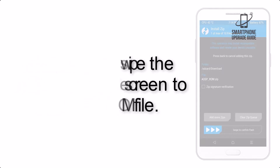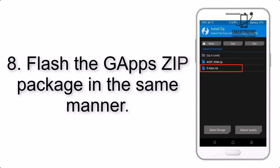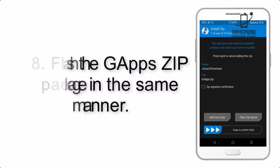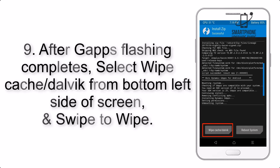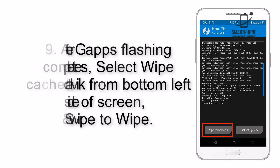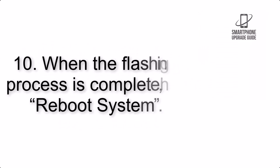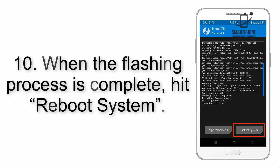Step 8: Flash the GApps zip package in the same manner. Step 9: After GApps flashing completes, select Wipe Cache and Dalvik from the bottom left side of the screen and swipe to wipe. Step 10: When the flashing process is complete,